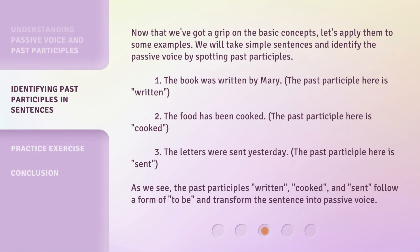Now that we've got a grip on the basic concepts, let's apply them to some examples. We will take simple sentences and identify the passive voice by spotting past participles. As we see, the past participles 'written,' 'cooked,' and 'sent' follow a form of 'to be' and transform the sentence into passive voice.